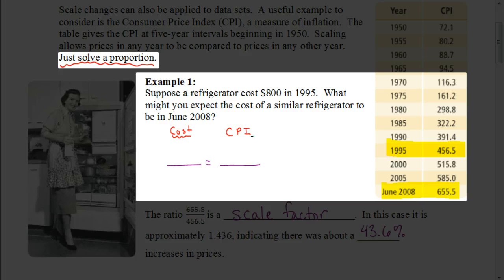Now, it's important that we set this up correctly for when we start to talk about a scale factor. What we're going to do is we're going to put our most recent information in the numerator, so we're going to use the information that we have from June of 2008 in the numerator. And we're going to use the information from 1995 in our denominator.